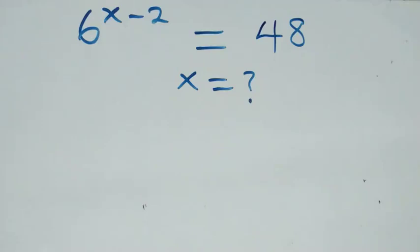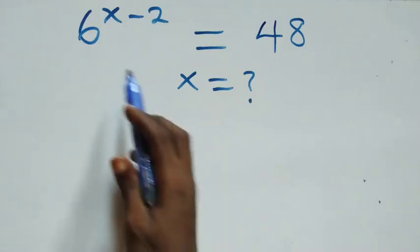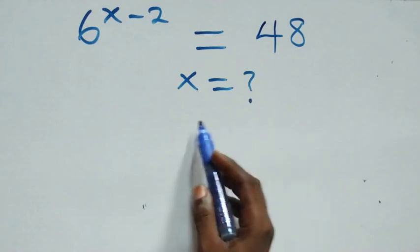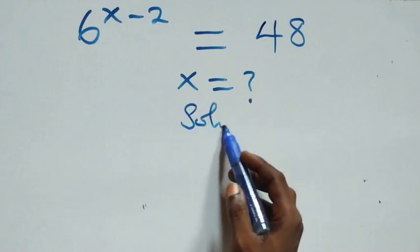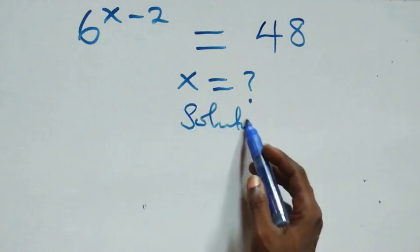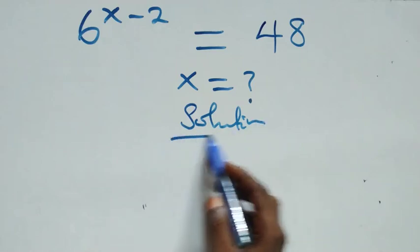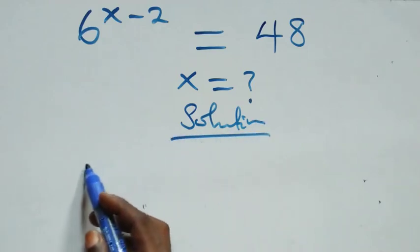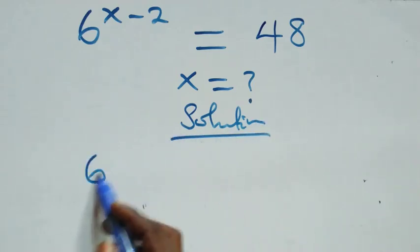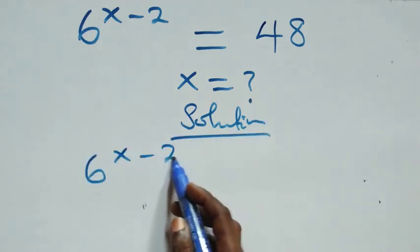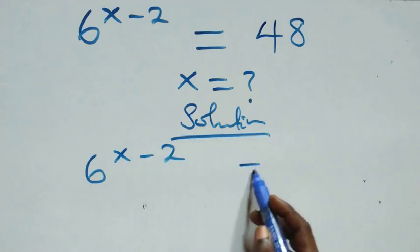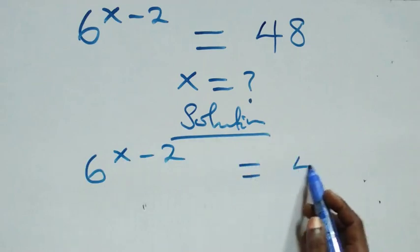Hello, you are welcome. How to solve this nice exponential equation. What we have here is: six raised to power x minus two equals forty-eight.